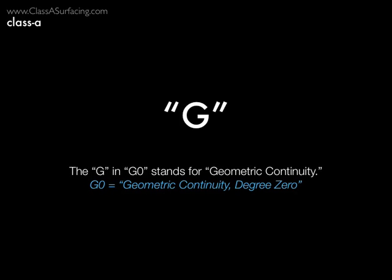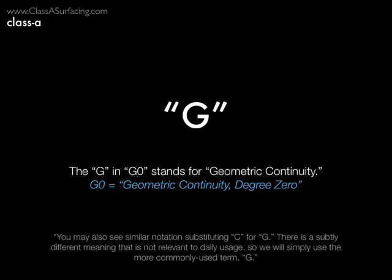That brings me to G. You've heard me mention G0 and G1 already, and you've probably seen it all over ClassAsurfacing.com. This stands for geometric continuity — so G0 would stand for geometric continuity degree zero. You can also see similar notation on other sites where they use C instead of G. They're basically equivalent. The notation C has a slightly different meaning mathematically, but the difference is only something that programmers and mathematicians care about. I'm going to continue to use G, just because it's more commonly used in the industry.